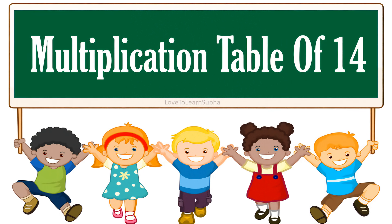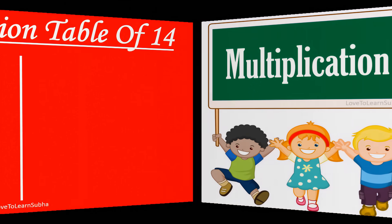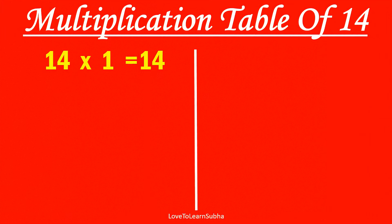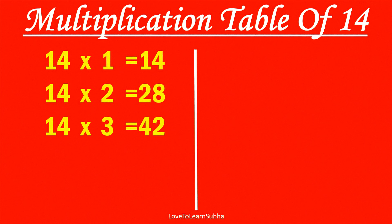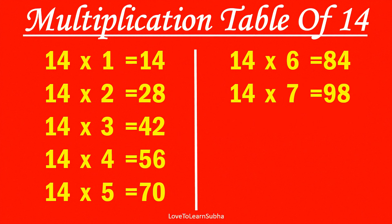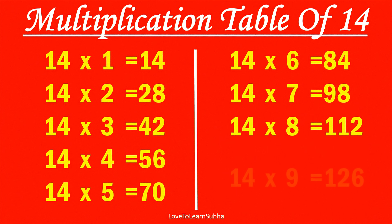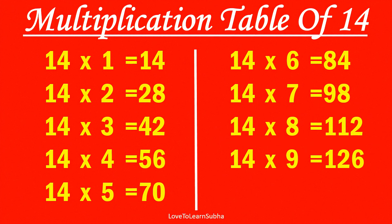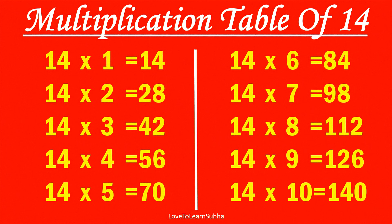Multiplication table of 14. 14×1 is 14, 14×2 is 28, 14×3 is 42, 14×4 is 56, 14×5 is 70, 14×6 is 84, 14×7 is 98, 14×8 is 112, 14×9 is 126, 14×10 is 140.